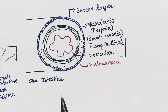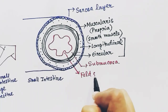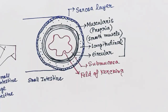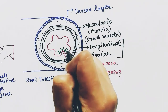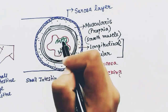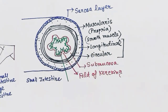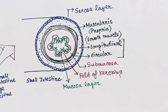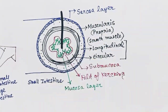After the muscularis layer comes the submucosa layer. It has some folds, and the folds of the submucosa layer are called the folds of Kerckring. After that comes the mucosa layer, which has lots of villi and lots of invaginations in it.